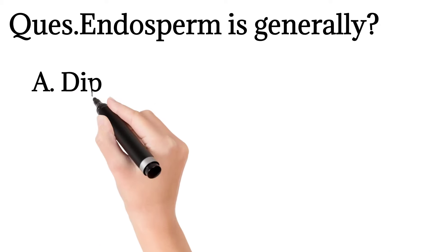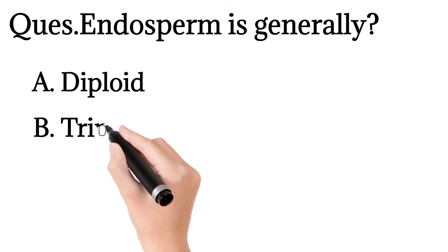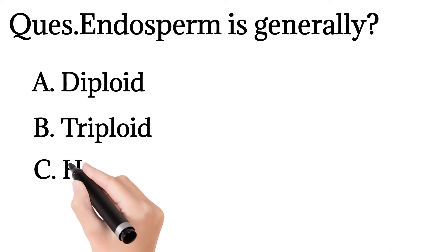9. Endosperm is generally: diploid, triploid, haploid, or polyploid.